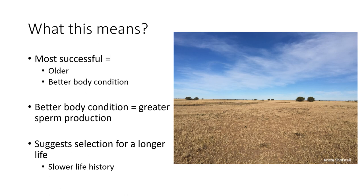Overall, this suggests the cause for a slow life history in this species may come from selection for body condition. If individuals do not reach their best body condition until later in life, there will also be selection for a longer life and higher survival, leading to a slower life history.